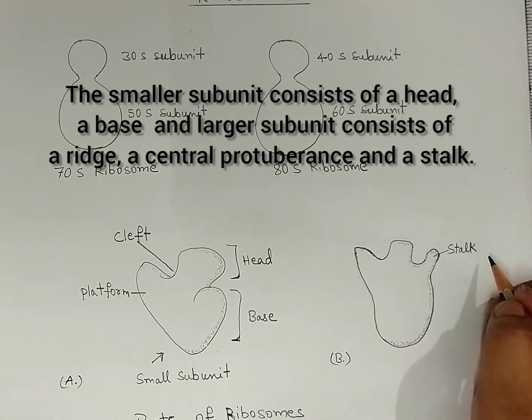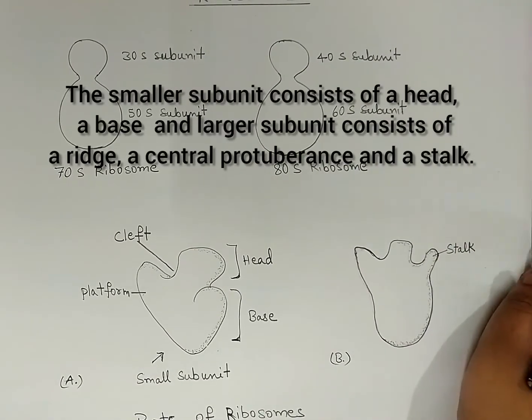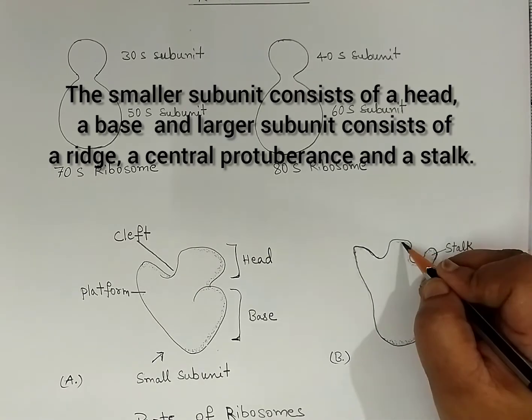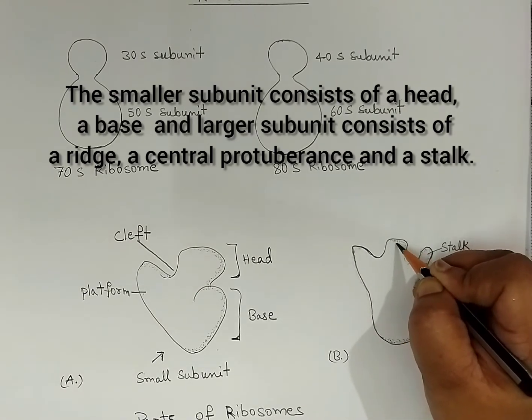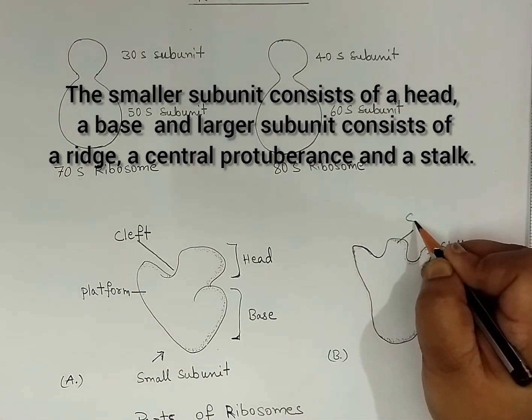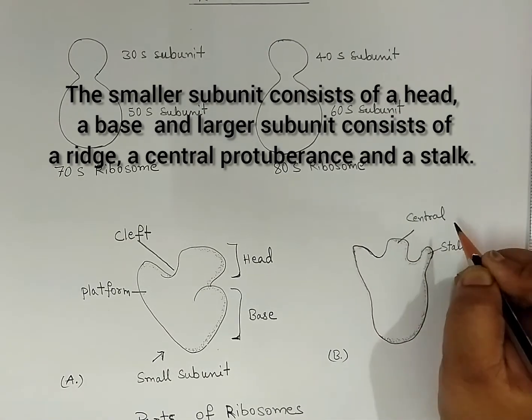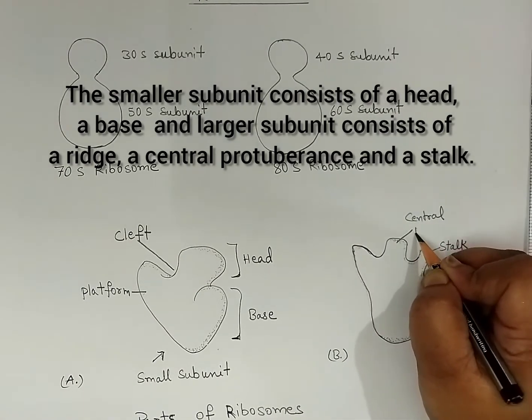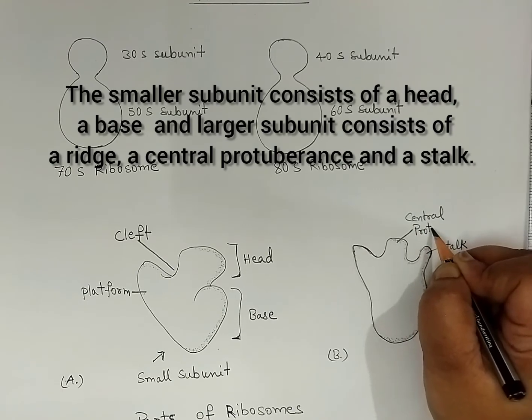The smaller subunit consists of a head and a base, while the larger subunit consists of a ridge, a central protuberance, and a stalk.